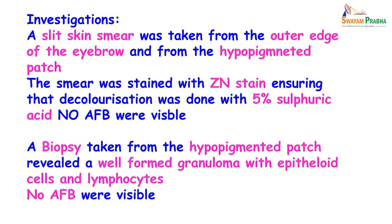In this patient's case, smears were prepared and stained with modified ZN stain. The modification is that instead of 20% sulfuric acid, we use 5% sulfuric acid, because Mycobacterium leprae is less acid-fast than Mycobacterium tuberculosis. A biopsy was also taken from the hypopigmented patch and it revealed a well-formed granuloma with epithelioid cells and lymphocytes. No acid-fast bacilli were visible.